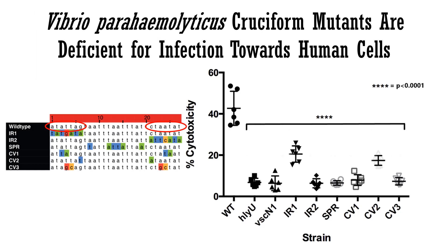The numbers in the graph indicate the percentage of human cells dead after a 4-hour infection. As expected, the unmodified Vibrio had the highest cell death. In contrast, we found that most mutants were significantly deficient for cell killing, indicating that the cruciform DNA region plays a vital part in regulating type 3 secretion system I biogenesis.